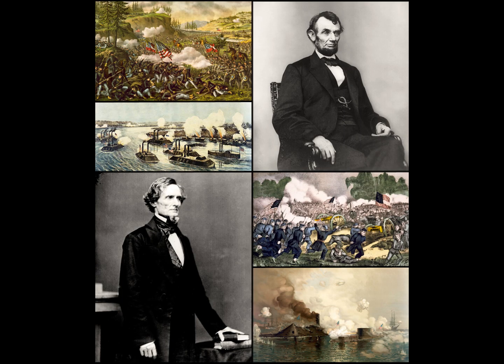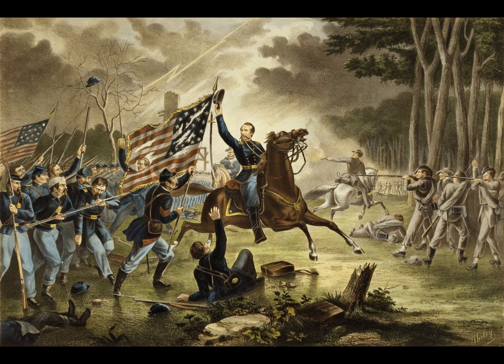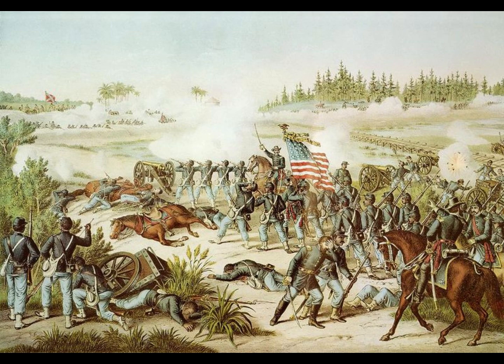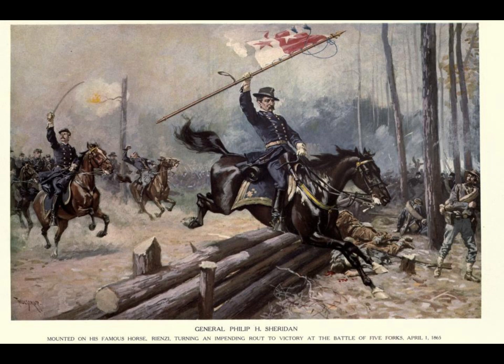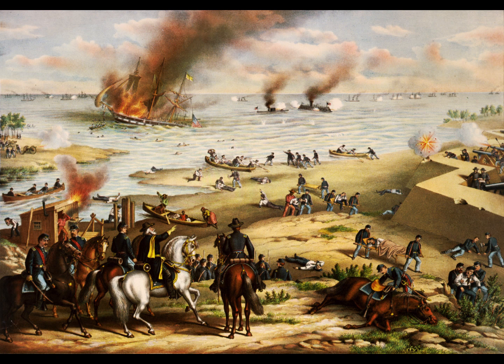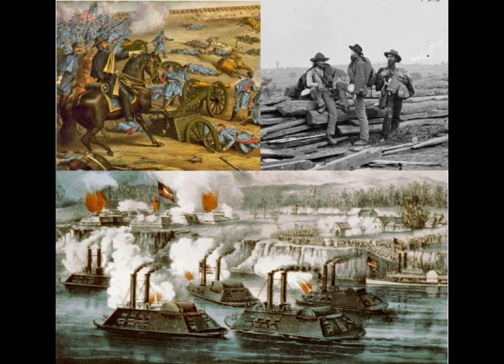The election of Abraham Lincoln in 1860 was the final catalyst for war. Lincoln, a Republican, opposed the expansion of slavery into the Western territories, although he did not initially call for its immediate abolition in the South. His victory, however, was seen by Southern states as a direct threat to their way of life. Fearing that slavery would be outlawed, seven Southern states, beginning with South Carolina, seceded from the Union and formed the Confederate States of America before Lincoln even took office.